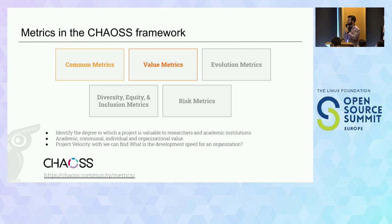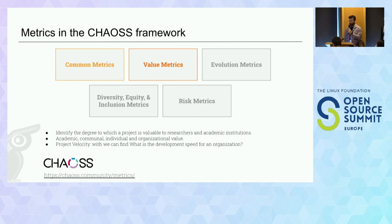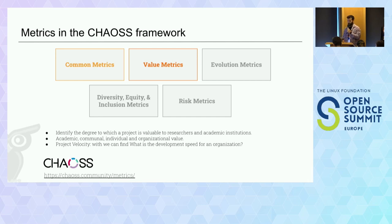The second working group is Value Metrics, where the goal is to identify the degree to which a project is valuable to researchers and academic institutions. The focus areas include academic value, communal value, individual value, and organizational value. One example metric here is project velocity, which shows what the development speed is for any organization.